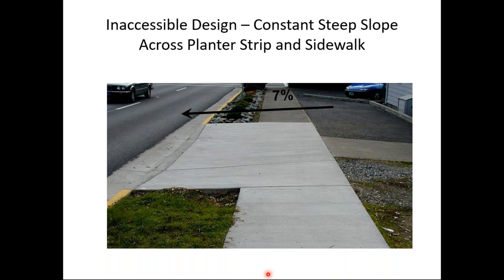This appears to be a brand new driveway at 7% grade, which creates a 7% cross slope on the sidewalk — now an inaccessible section. It should never have been permitted in the first place, and will need to be added to the agency's transition plan as a barrier. The best solution, if possible, is to put a level route at the back of the sidewalk.